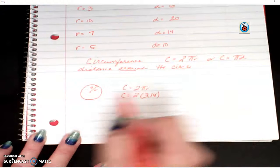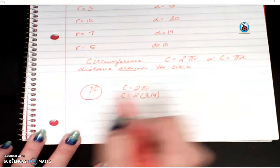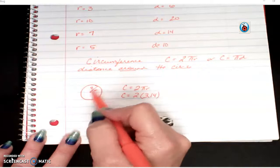Pi is what happens if you actually took a string and measured the distance around a circle, and then divide it by the distance across the circle. That's going to give you pi.